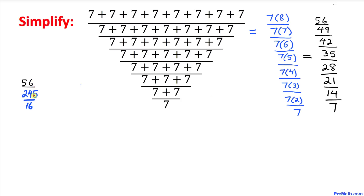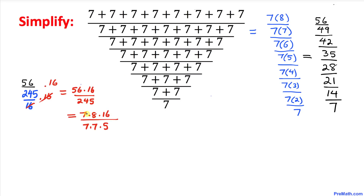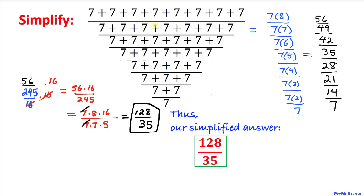Finally we end up with 56 divided by 245 divided by 16. Simplifying further: multiply by 16 on top and by 16 on the bottom — those cancel — giving us 56 times 16 divided by 245. Factoring: the 7s cancel, and on the top 8 times 16 is 128, divided by 35. That is our simplified answer: 128 divided by 35.